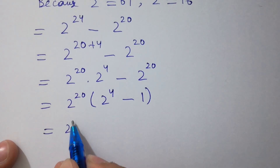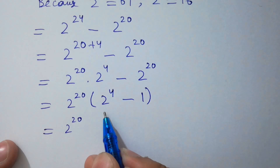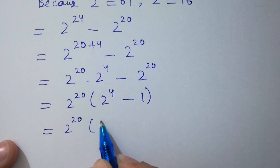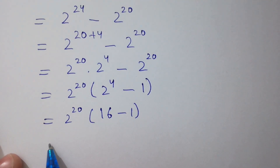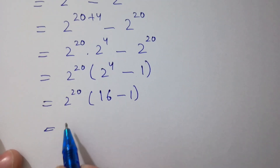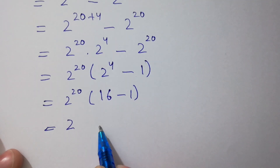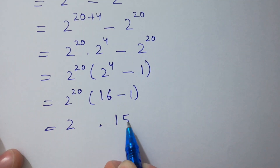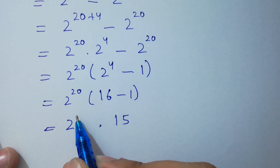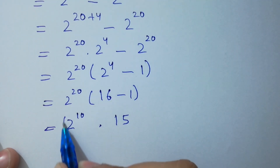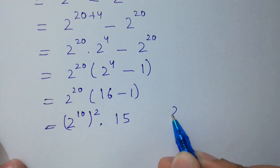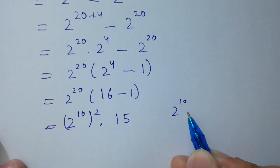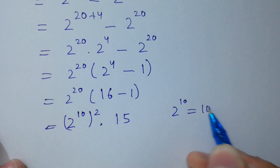So we have 2 to the power 20 times 2 to the power 4 minus 1. Since 2 to the power 4 equals 16, we get 16 minus 1 equals 15. Also, 2 to the power 20 is the same as 2 to the power 10, to the whole power 2, and 2 to the power 10 equals 1024.